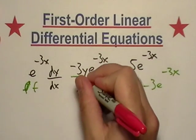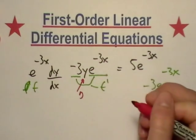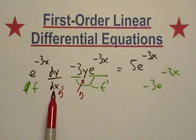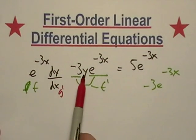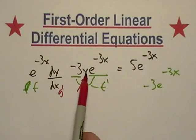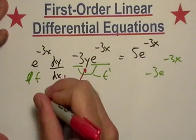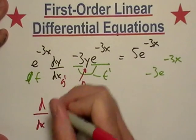Likewise, if this y were a g, then this would be g prime, wouldn't it? If I took the derivative of y, I would get implicit differentiation and I'd just get dy/dx.